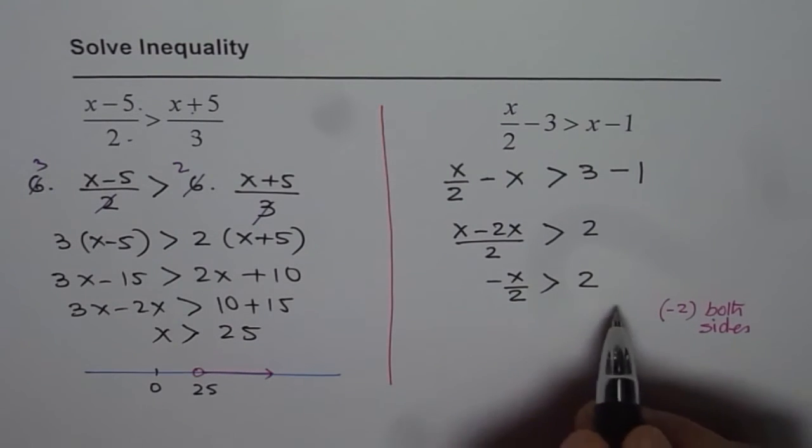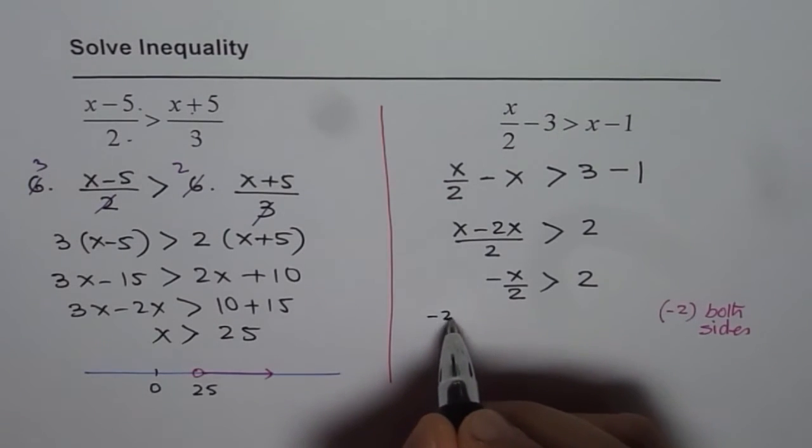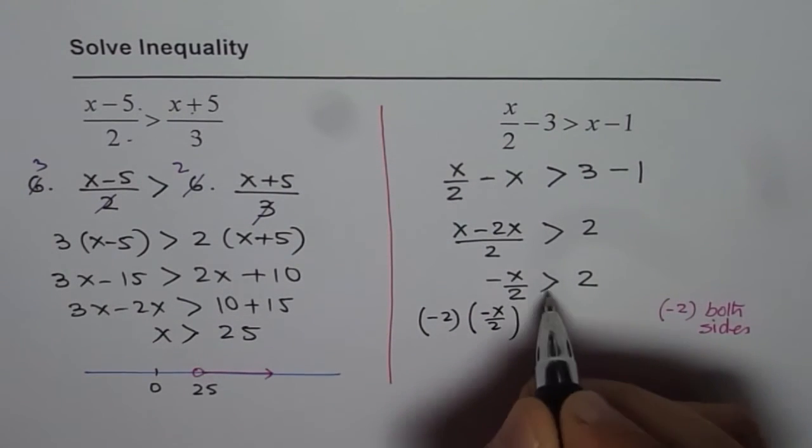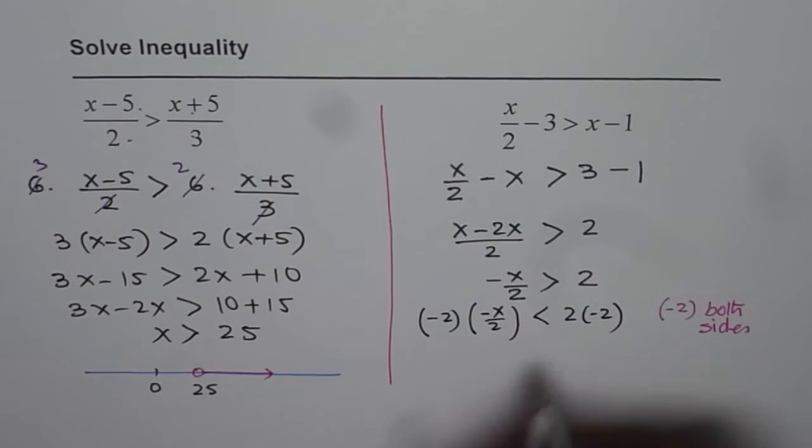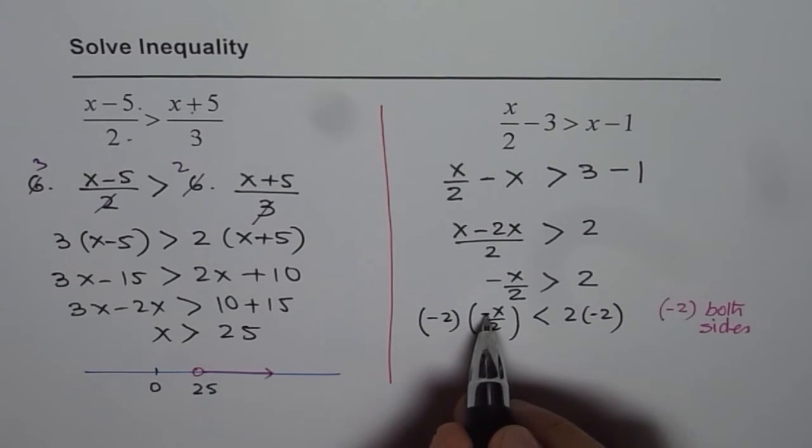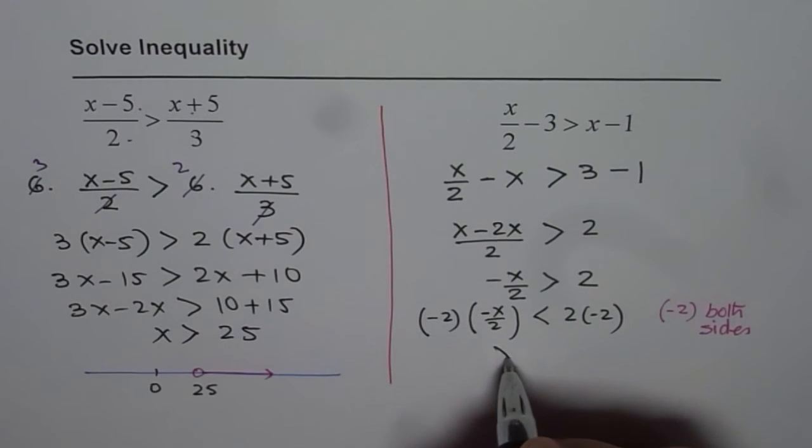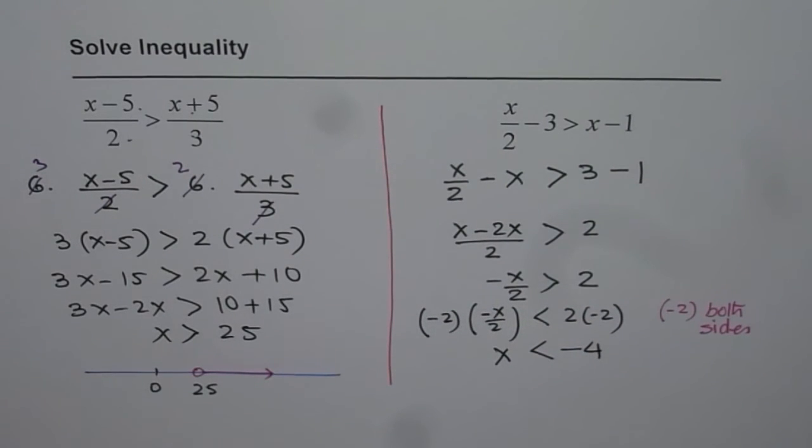Now if I multiply by minus 2, I really get minus 2 times minus x over 2 and I have to reverse the sign. Let me reverse it. 2 times minus 2. Do you see that? Now minus 2 times minus x will become plus 2x and 2 divided by 2 is 1. So we get x is less than minus 4 as your solution. Do you get it? So that is how we find the solution.